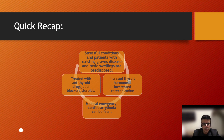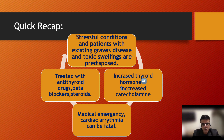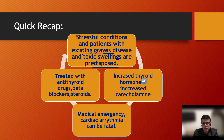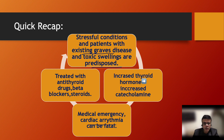To recap: patients with existing Graves' disease, toxic swellings like toxic nodular goiter, and follicular adenomas are particularly predisposed when exposed to stressful conditions. Treatment involves antithyroid drugs, beta blockers, and steroids as the common drugs employed. It is a medical emergency, and cardiac arrhythmia can be particularly fatal. The major manifestations are due to increased thyroid hormone, which causes increased catecholamine action. Thank you for listening, and see you in the next presentation.